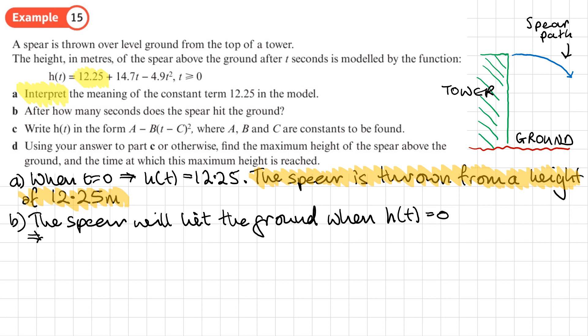That means that this quadratic that I've got here is equal to zero. Now I'm just going to swap the terms around so I've got -4.9t² first, and then 14.7t - don't have to do this - and then +12.25. And that's going to equal zero. So I now need to solve this quadratic.